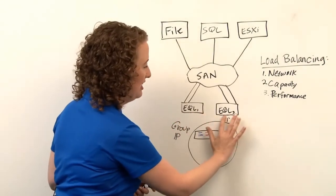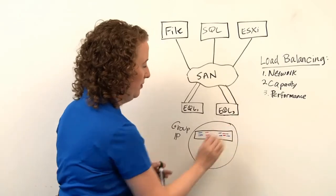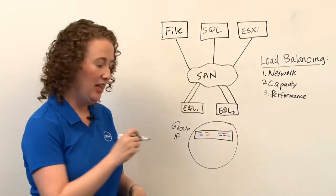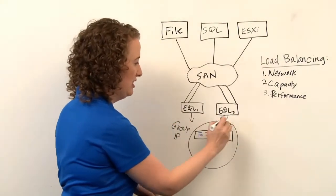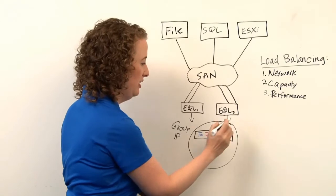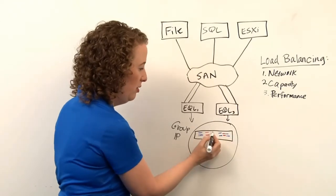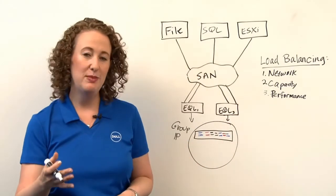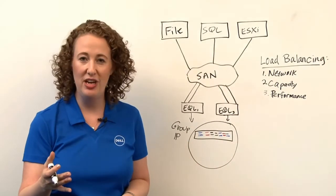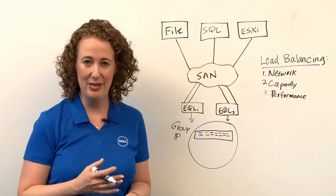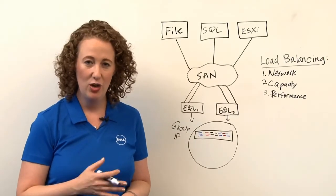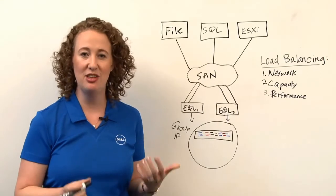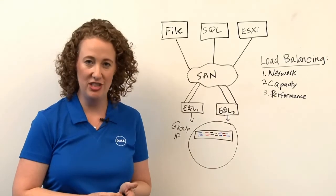Now let's take a look at a second example. In this example, the latency on both of the arrays is reasonably low, but the capacity has filled up. Perhaps this is because your environment has more static data than you expected, or the workload just doesn't require the disk technology that you purchased.